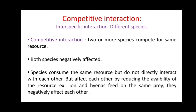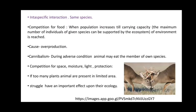Species consume the same resources but do not directly interact with each other, but affect each other by reducing the availability of resources. Example: lion and hyenas feeding on the same plane — they negatively affect each other. Intraspecific interaction means interaction between the same species.